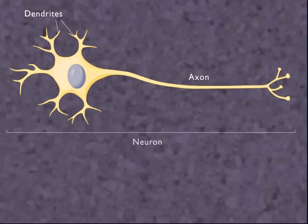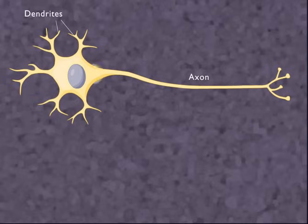Voltage-gated channels open and close in response to an electrical voltage, so they are affected by changes in electrical charge around them.